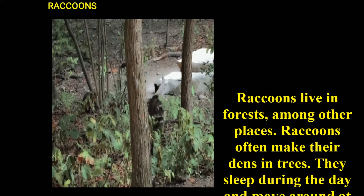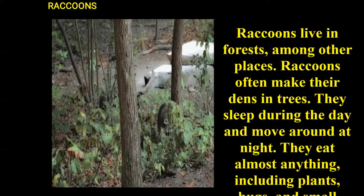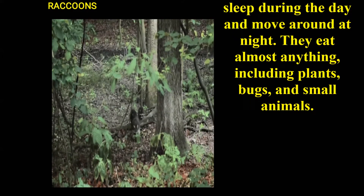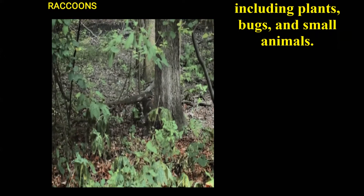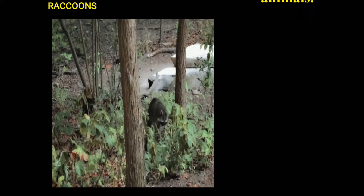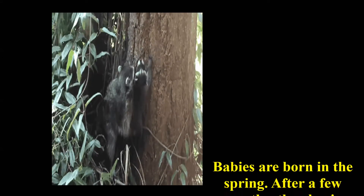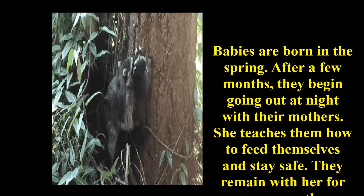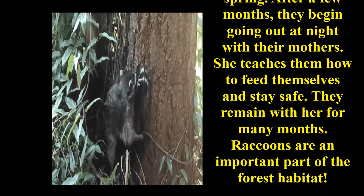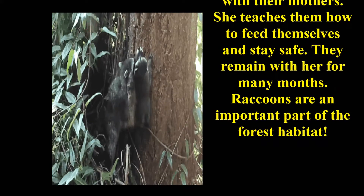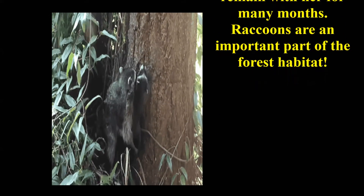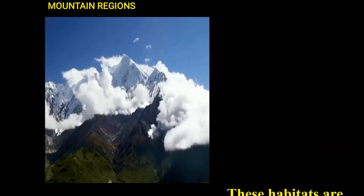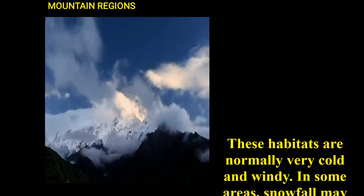Raccoons live in forests among other places and often make their dens in trees. They sleep during the daytime and move around at night, eating almost anything including plants, bugs and small animals. Babies are born in spring, and after a few months they begin going out at night with their mothers, who teach them how to feed themselves and stay safe. Raccoons are an important part of the forest habitat.